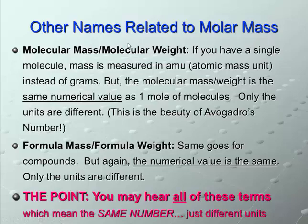For example, in molecular mass and weight, it's atomic mass unit, or AMU. But, again, it's the same number value. Avogadro's number allows us to do this because we're dealing with ratios.